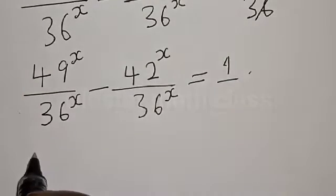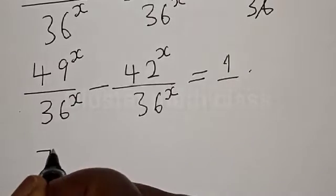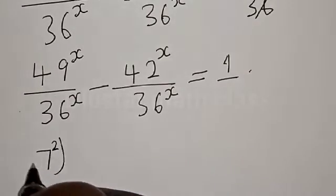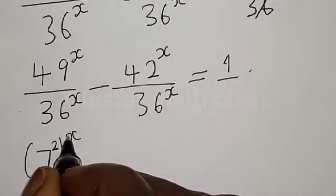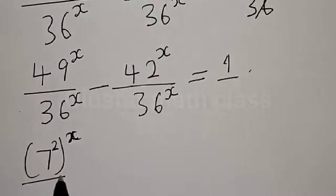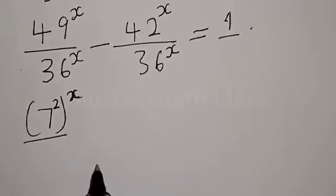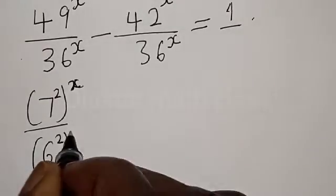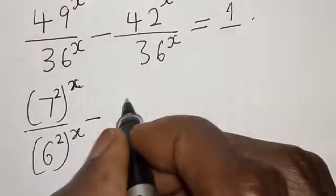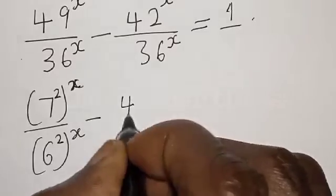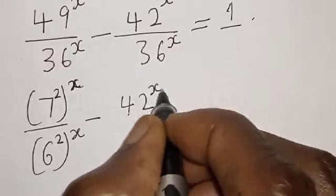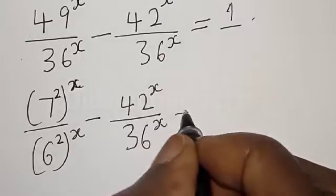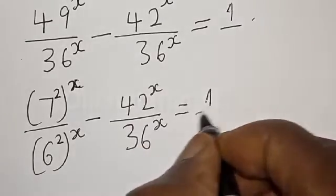Then 49 is a perfect square, which is 7 squared, and 36 is also a perfect square, which is 6 squared. So we have 7 squared raised to power s divided by 6 squared raised to power s, minus 42 raised to power s divided by 36 raised to power s, is equal to 1.